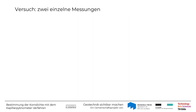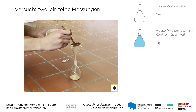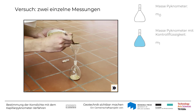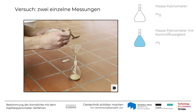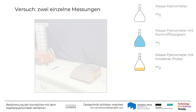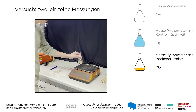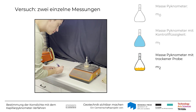Nun wird der eigentliche Versuch zur Bestimmung der Korndichte Rho-S durchgeführt, der auch aus zwei einzelnen Messungen besteht. Die ofengetrocknete Probe wird in das saubere und trockene Pygnometer gefüllt und anschließend die Gesamtmasse von Pygnometer und Probe als M2 bestimmt.